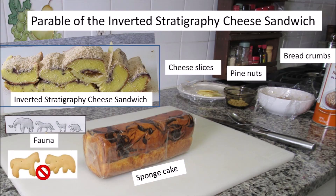The parable of the inverted stratigraphy cheese sandwich uses ordinary language that everyone can understand, but it makes a few substitutions. Sponge cake is used to represent stratigraphic layers. Breadcrumbs are sprinkled to simulate Aeolian deposits. Fauna are represented by paper cutouts — I was not able to buy animal crackers because the grocery store was closed when I made this video.